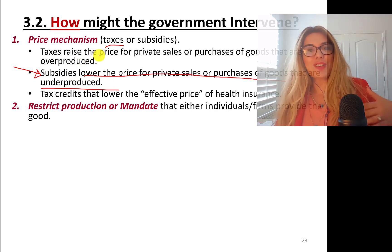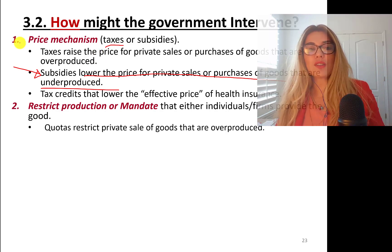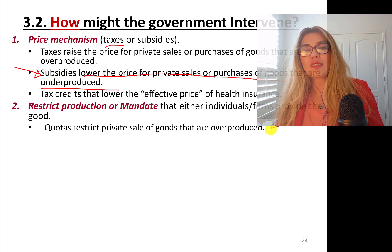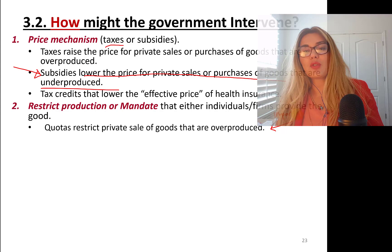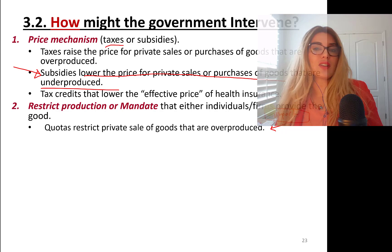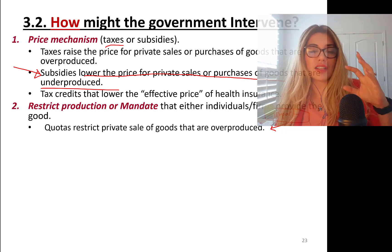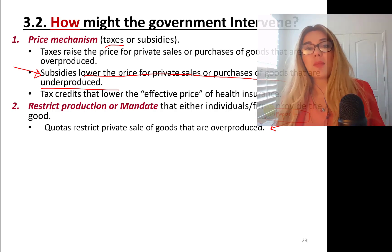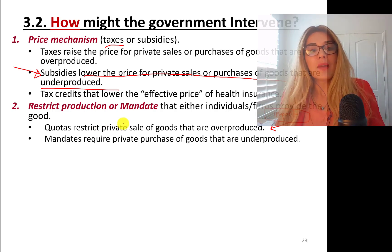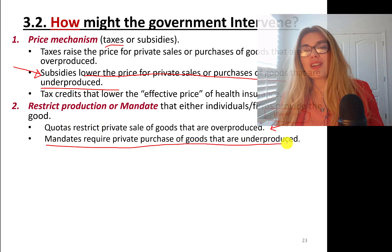Quotas restrict the private sale of goods that are overproduced. For example, we have import quotas — such as textile import quotas — to protect local producers. Different countries take up shares of these import quotas, and China holds the most import quotas for clothing.